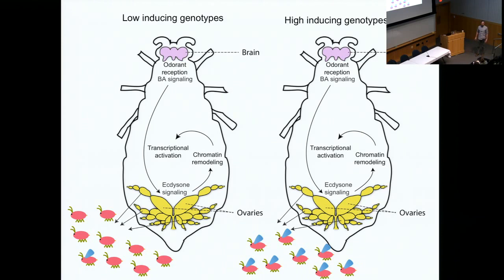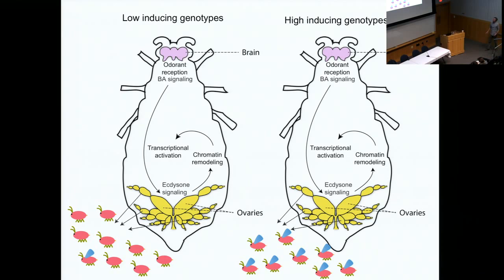If you work on aphids for a long time, you get familiar with the personalities of different genotypes. Some genotypes are really hard to induce winged offspring from — you can neglect them and come back after three weeks with the cage overrun by aphids and still not get many winged offspring. Other aphids, even in pristine solitary conditions, still tend to produce some winged offspring. There's a lot of variation between our lines in terms of sensitivity to crowding, and we wanted to know what genes are involved in these genetic differences between low-inducing and high-inducing lines.